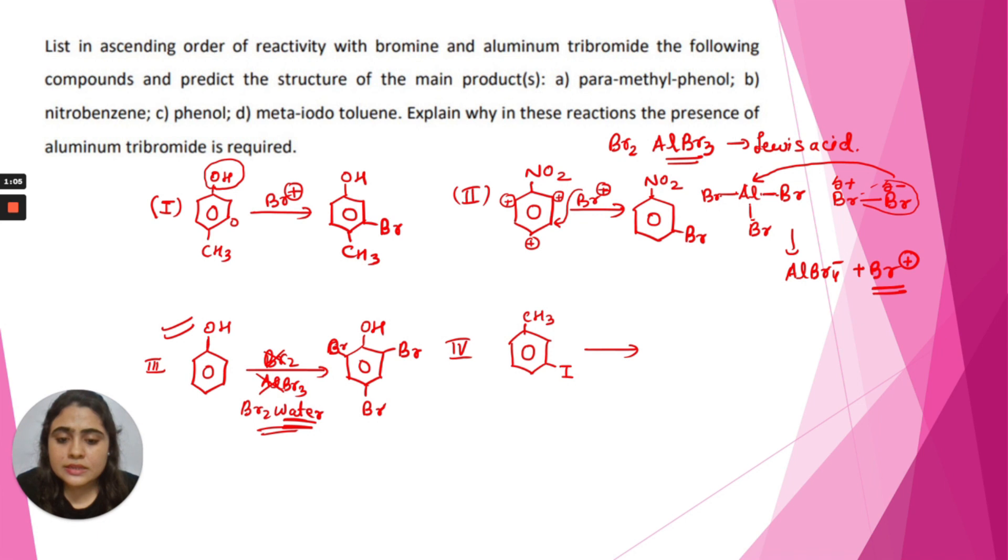Next, structure 4 - again CH3 is an ortho and para-directing group. So the bromonium ion - here you can see both the ortho position is empty and the para position is also empty. So this bromonium ion will attack both positions. In one product we will get an ortho-substituted product, and in the other we will get a para-substituted product.